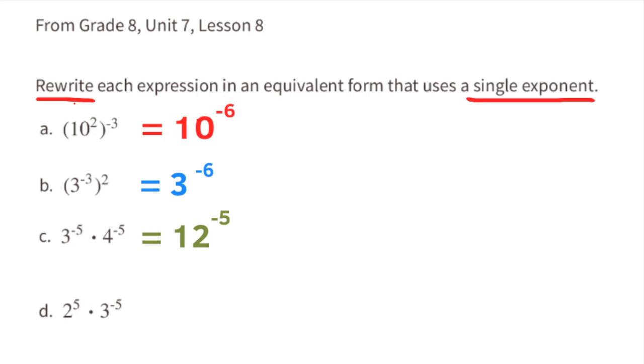Part D: 2 to the power of 5 times 3 to the power of negative 5. In this situation you move the base number that has the negative exponent to the bottom of the fraction, making the expression 2 to the power of 5 over 3 to the power of 5, or 2 over 3 all to the power of 5.